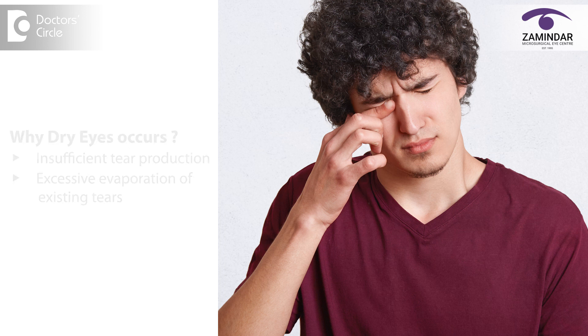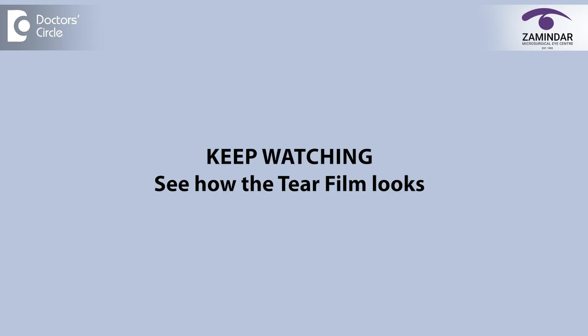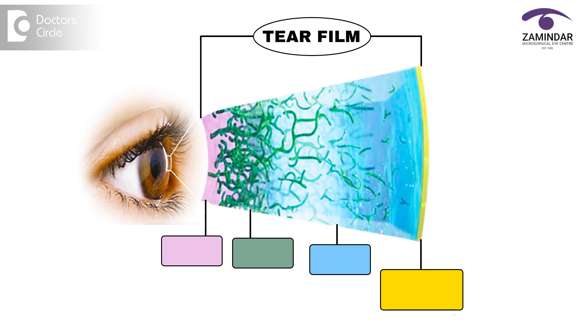Coming into the anatomy of the tear film and the meibomian glands. First, the tear film — it has three layers. The outermost layer is called the lipid or the oily layer. The middle layer is called the aqueous layer or the watery layer. The innermost layer is called the mucin layer, which is adhered onto the cornea and the conjunctival surface.